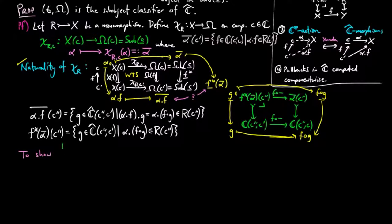Finally, to show that the following is a pullback, it is enough to show that for each component C, the following is a pullback in the category of sets.